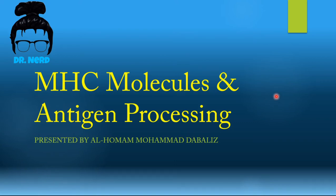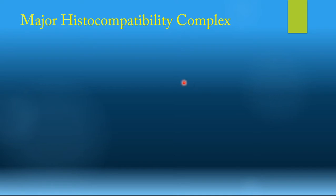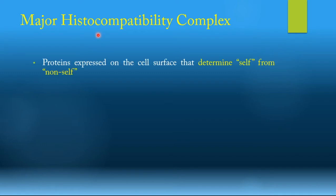As-salamu alaykum. Today we will be discussing the major histocompatibility complex molecules and antigen presentation and processing. The major histocompatibility complex, or MHC for short, are proteins that are expressed on the cell surface of all nucleated cells in the human body — or in all vertebrates. They determine which cells are self or non-self, so which are from the body and which are from outside the body.